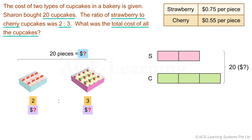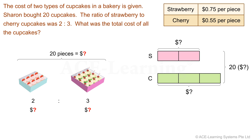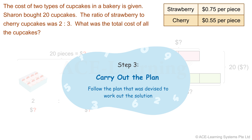Let's indicate that in the model. This is for finding the total quantity and the total cost of the strawberry cupcakes. And this is for finding the total quantity and the total cost of the cherry cupcakes. Now that we have completed the model, let's move on to the next step. Step 3: Carry out the plan. Follow the plan that was devised to work out the solution.